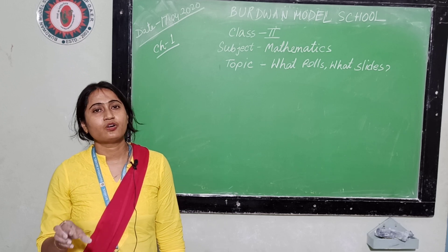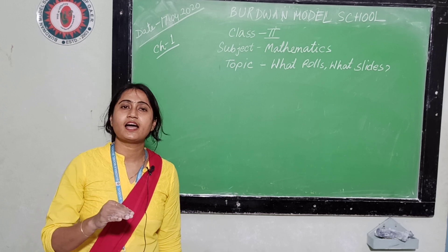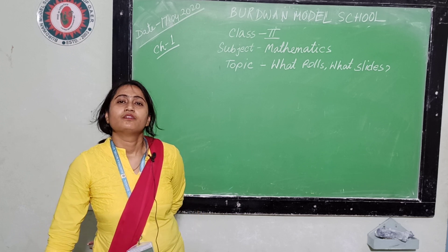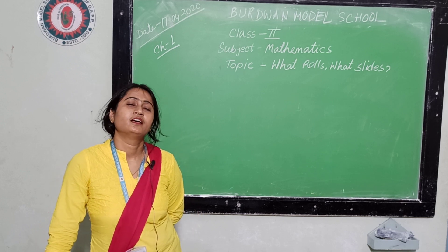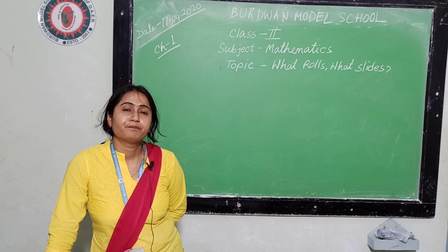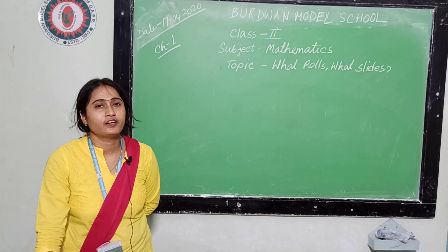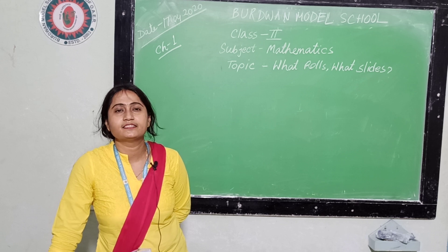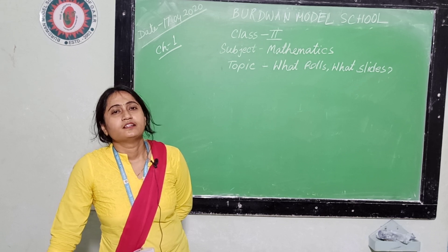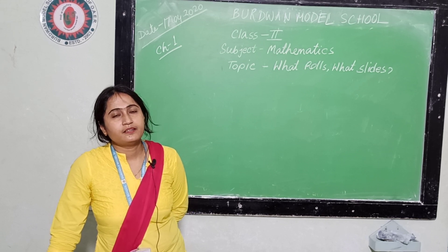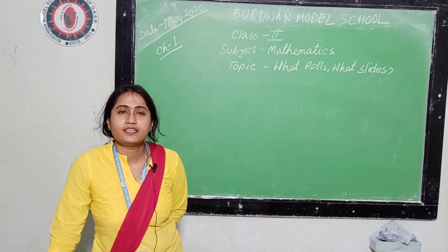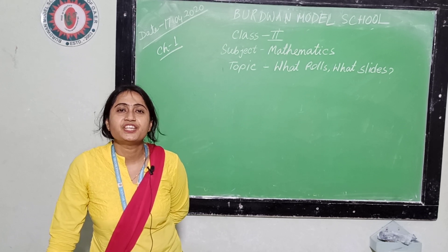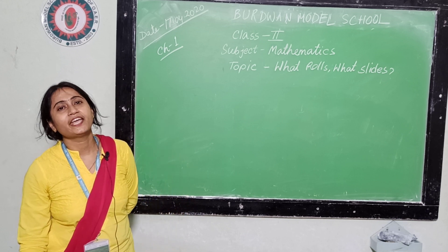Today first we will learn about plane shapes. We already know that plane shapes like triangle, rectangle, square, circle — these are the plane shapes and these are called 2D shapes.